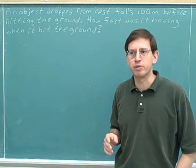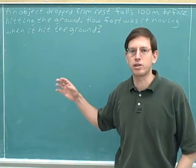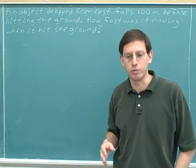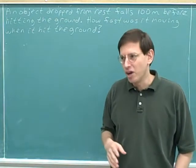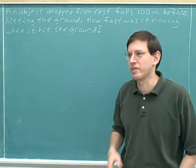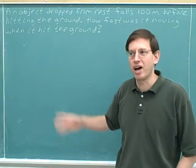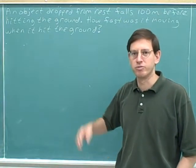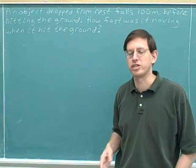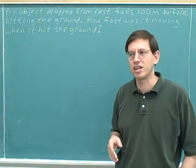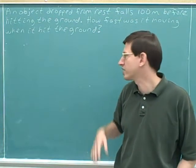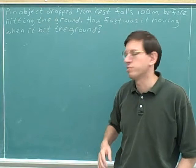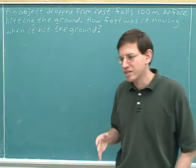If we ignore bouncing and just think the ground has stopped it, then the instant after it hits the ground, you're not moving at all and your speed would be zero. But that's so obvious it's kind of boring and uninteresting. So the reasonable interpretation is that the question is asking us how fast was the object moving the instant before it hit the ground? Because the instant before, it was moving quite quickly, and it's not really obvious how quickly it was going.